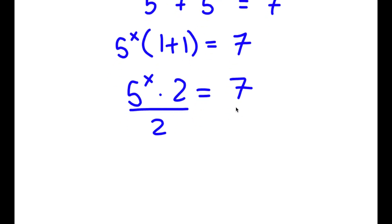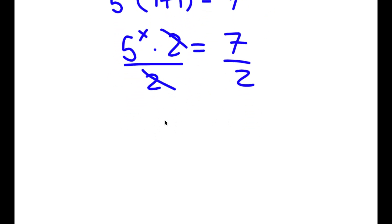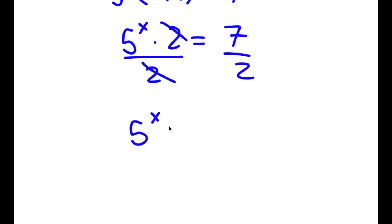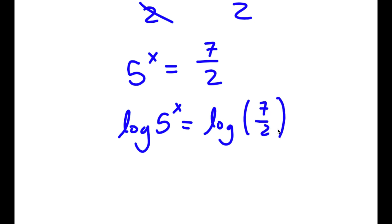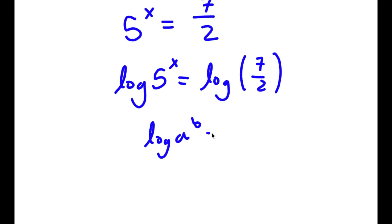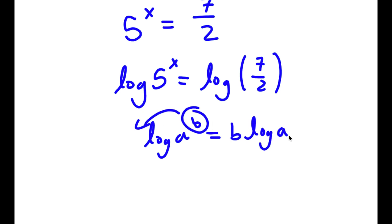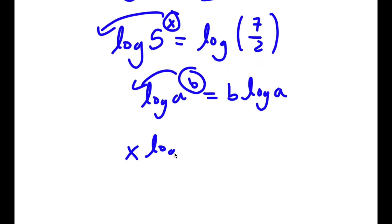Now I can divide both sides by 2, so these two cancel out, and now I have 5 to the power of x is equal to 7 over 2. Now if I take the log on both sides, I have log 5 to the power of x is equal to log 7 over 2. If I have something in the form log a to the power of b, I can move this exponent b to the front, so this equals b times log a. So I can move x to the front, and now I have x times log 5 is equal to log 7 over 2.